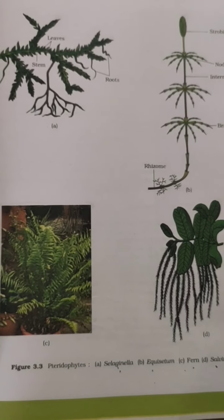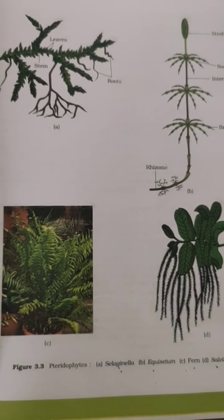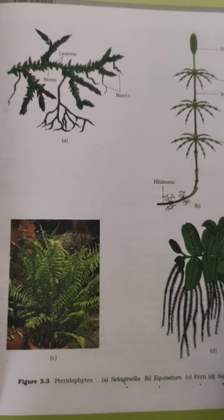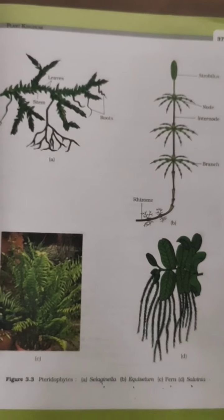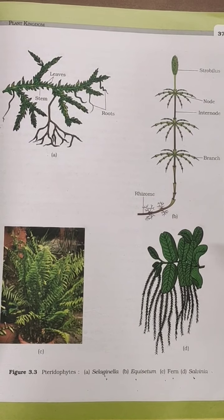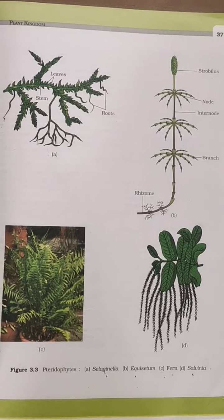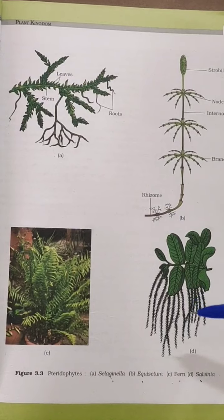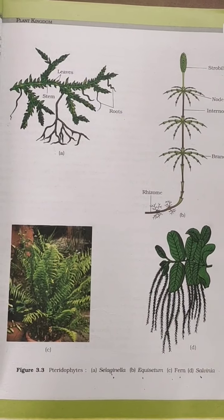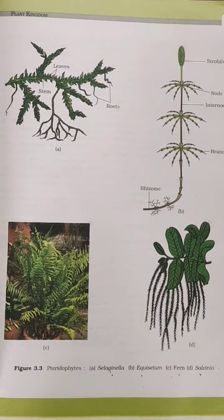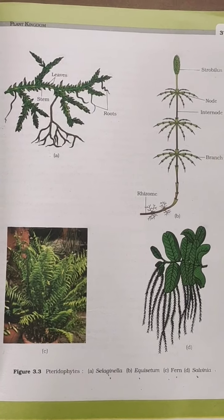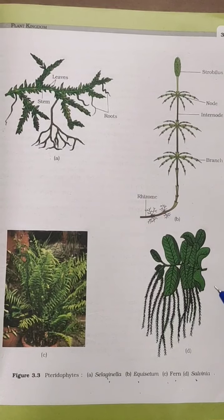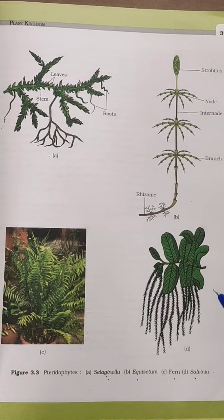In these pteridophytes, we have seen that they have true roots, true stems, and true leaves. And the plant which we see is actually the sporophyte. That means the sporophyte is the dominant phase in the life cycle of pteridophytes. They have true roots, stems, and leaves, which is why they are considered advanced organisms. The sporophytes bear sporangia, subtended by leaf-like appendages called sporophylls.